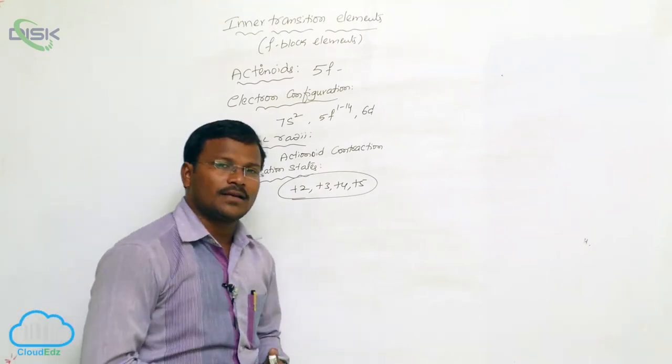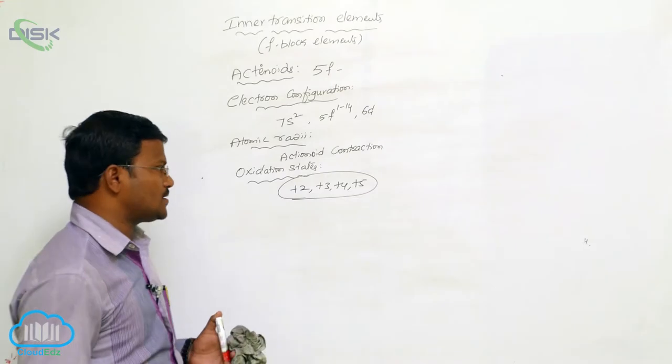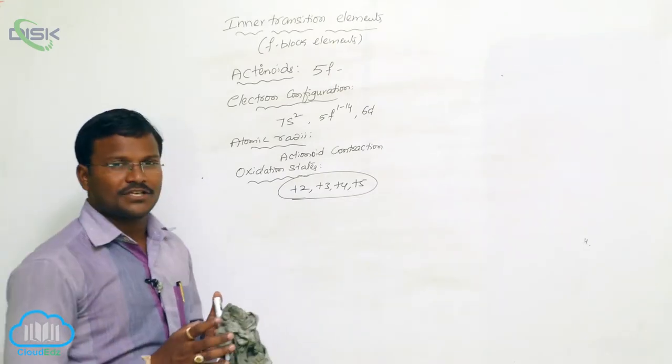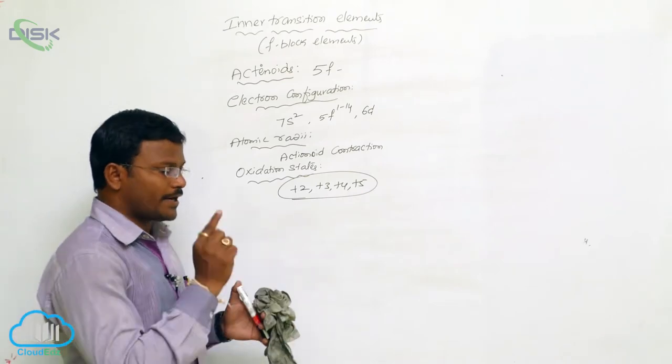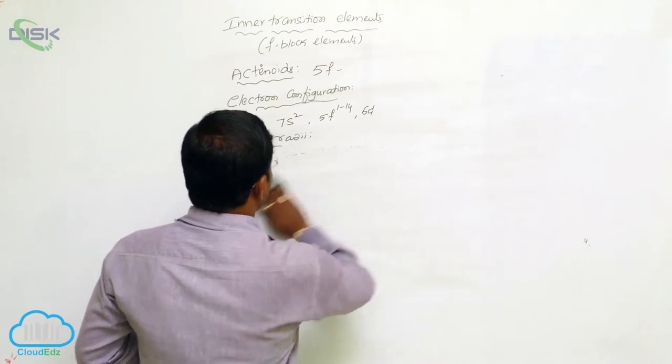But when compared to lanthanides, actinides are less reactive towards other chemical substances due to most of the elements belonging to this classification being radioactive elements. This is about inner transition elements.